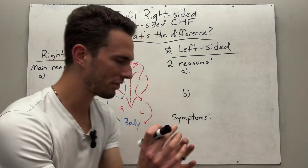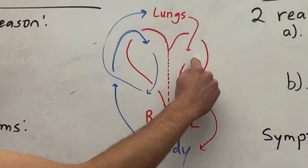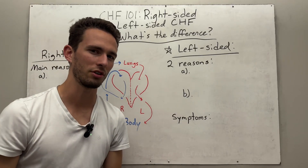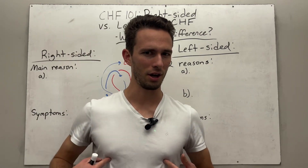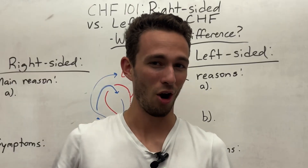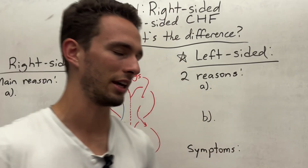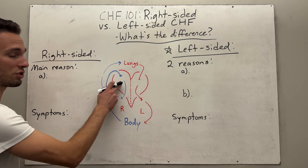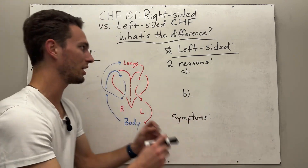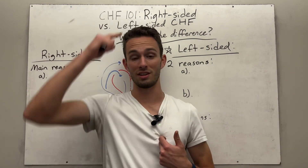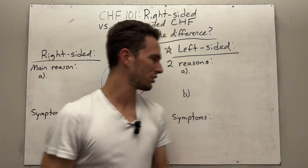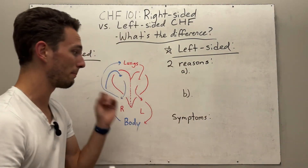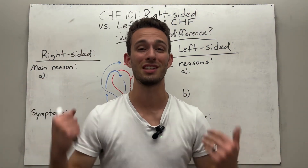Why is that? Remember, the left side of the heart pumps to the body, and the right side pumps to the lungs. The lungs are right next to the heart, so the right side is usually fine from an efficiency standpoint. But the left side has to pump from the heart to the tip of your head to the tip of your toes, so it's under very high demand. Even a small drop in efficiency will massively affect the body.